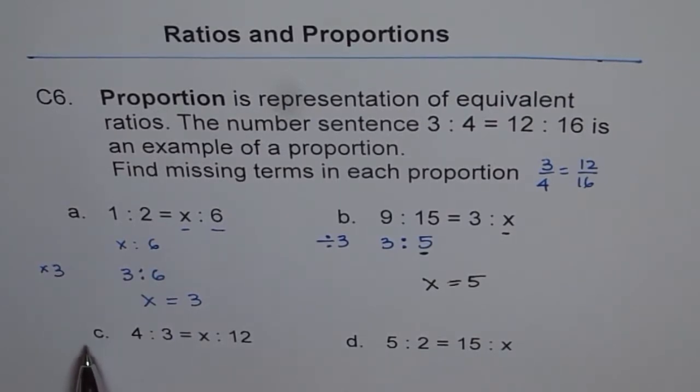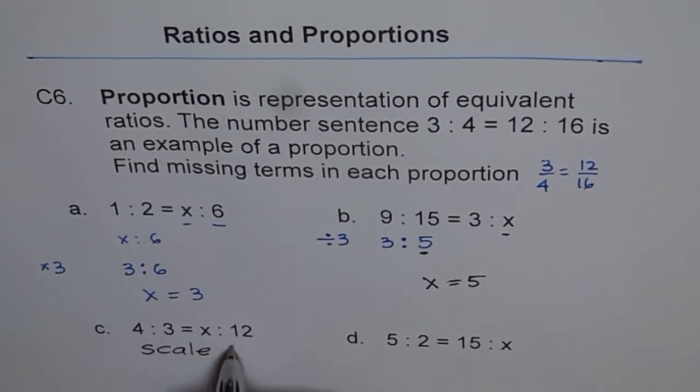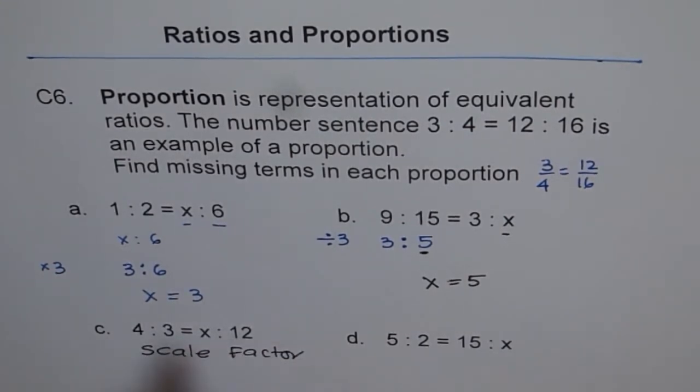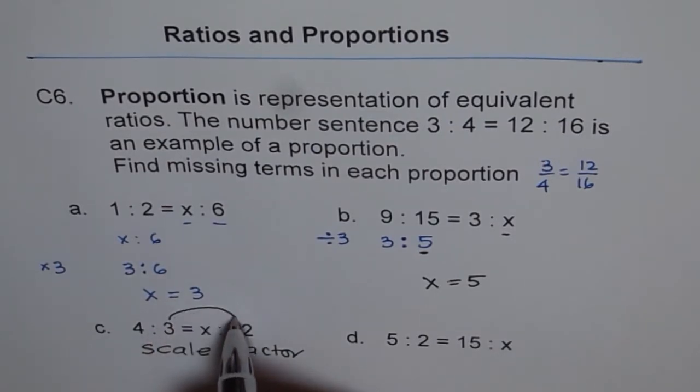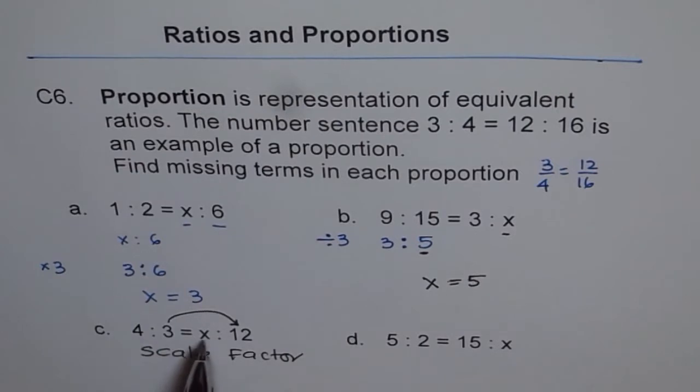So for you, there are two more questions for you to try. 4 is to 3 equals to x is to 12. So you have to find the scale factor here. So what you need to find is always scale factor. What is the scale factor? You can find scale factor from 3 and 12. How do you get 12 from 3? And multiply this 4 with the same number.